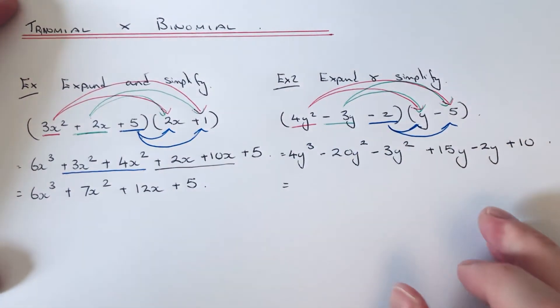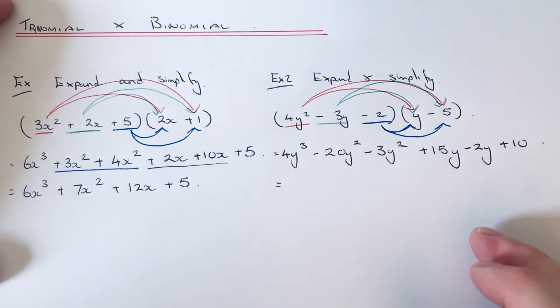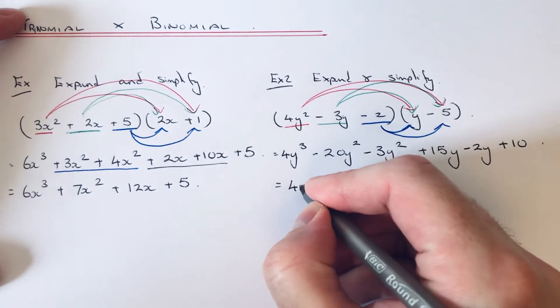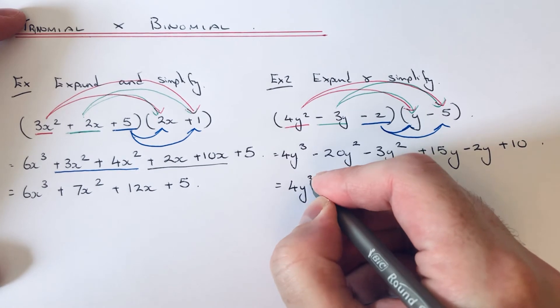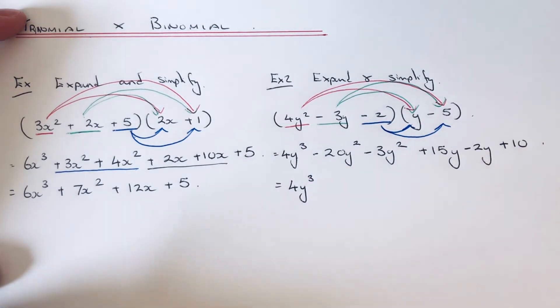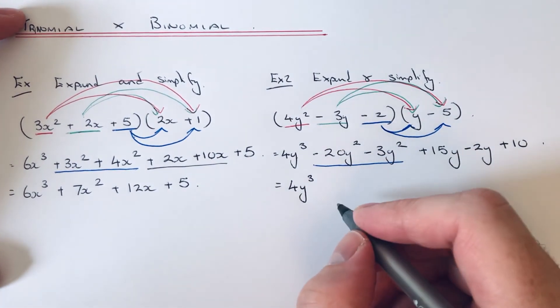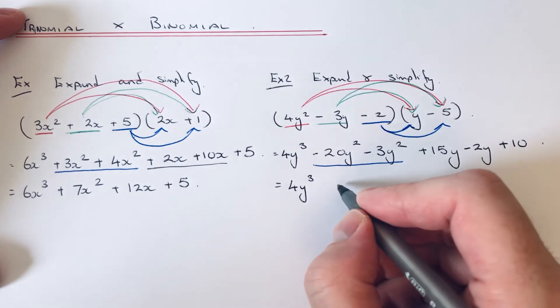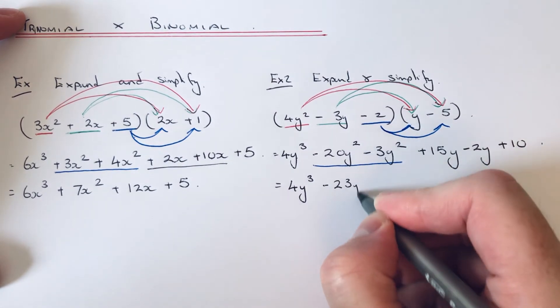All we've got to do now is simplify this expression. We've only got one y³ term, so just copy that down. Then we can simplify the y² terms, so minus 20y² minus 3y² is minus 23y².